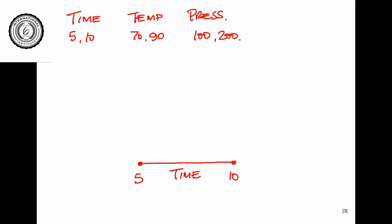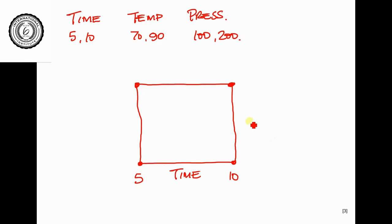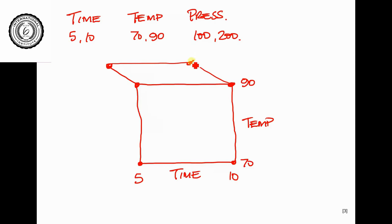Then we test temperature whilst those two tests are going on, giving us four test combinations. Temperature goes from 70 at the bottom to 90 at the top. Finally, adding the third variable — pressure — creates a cube, which is known as a design space, and we've tested at the corners of that design space.